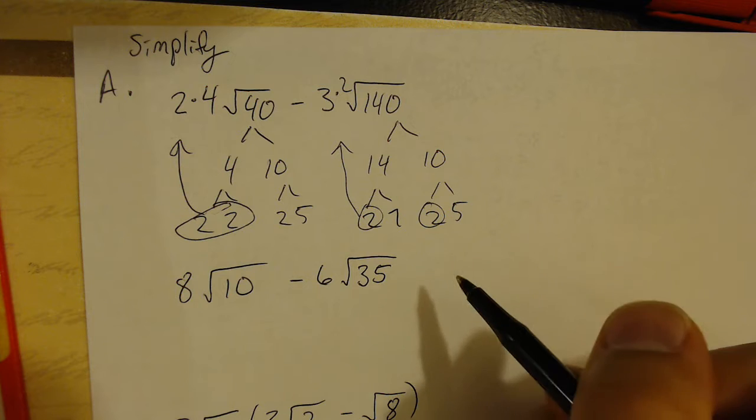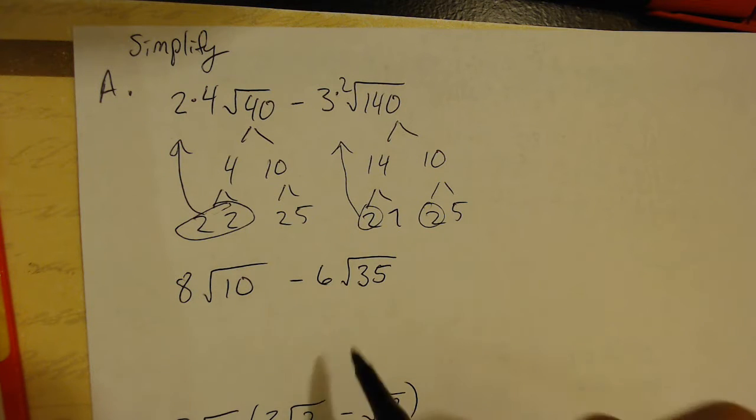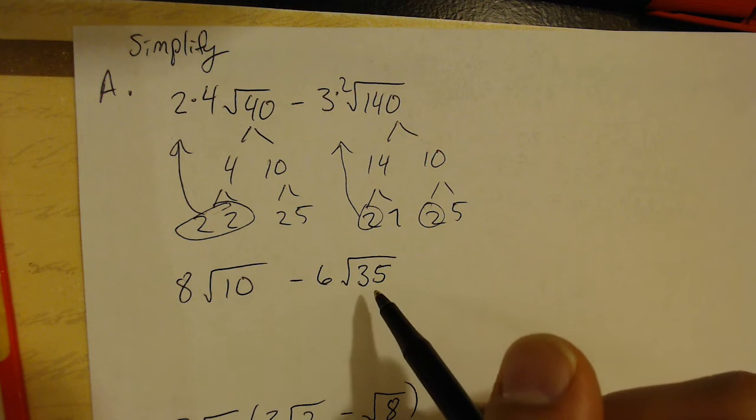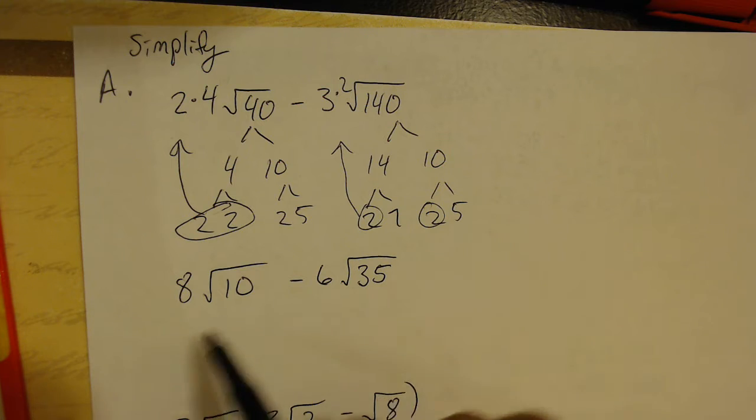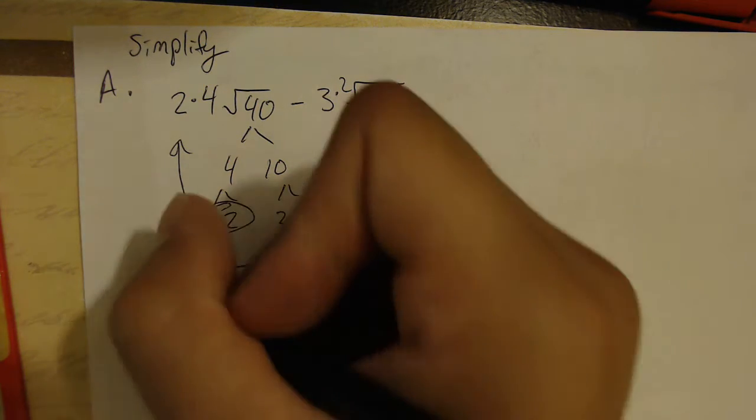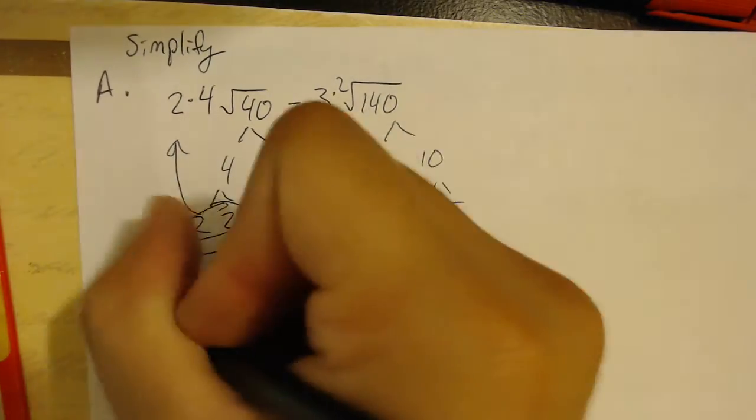From here, we're going to check and see if we have any like terms that subtract, and we don't. If these radicals were both the same, for example, if this were 6 times the square root of 10, we'd have like terms, and we'd be able to combine them, but we don't, so our answer is just that for now.